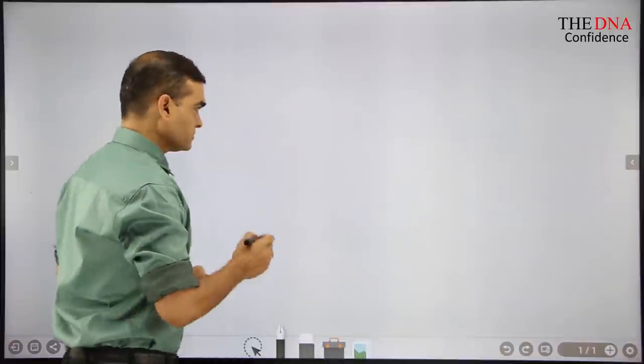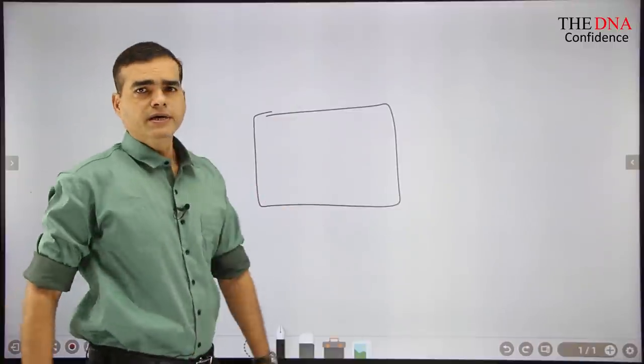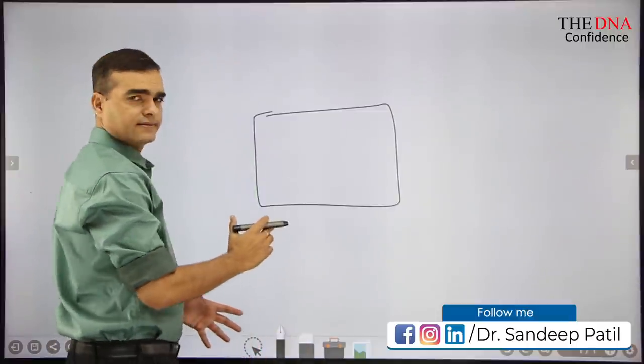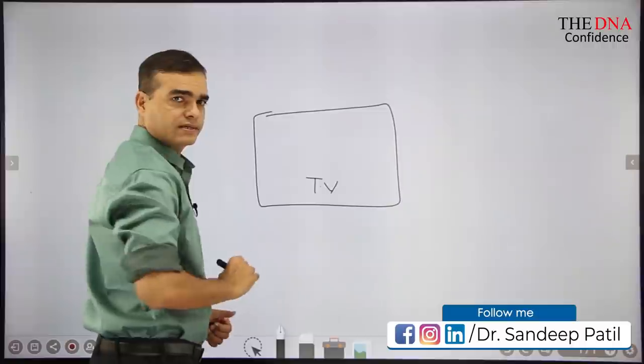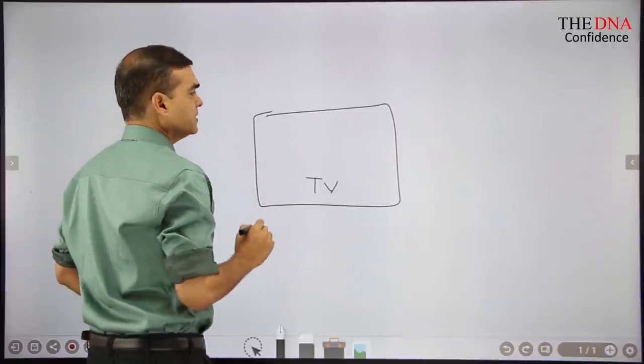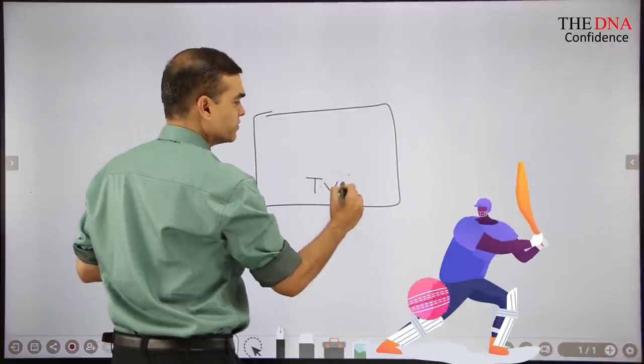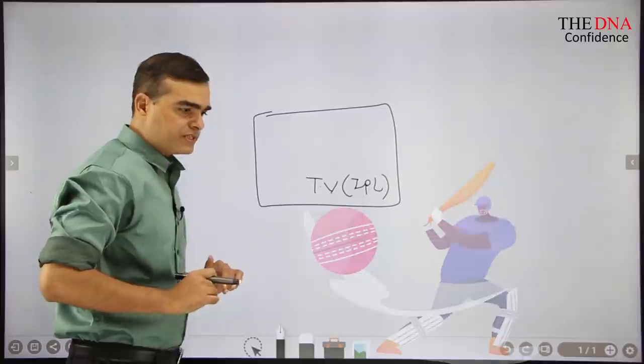See here friends, let us take this. I will draw one circle here, one square here. Suppose this is a TV and we'll call this as entertainment. You're taking entertainment. This is a TV and on this TV you are watching IPL.